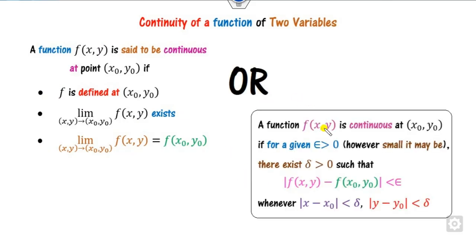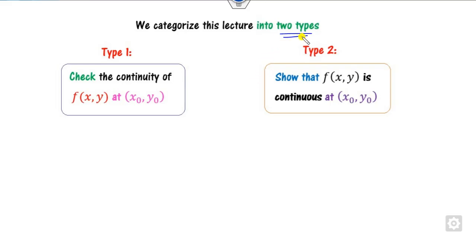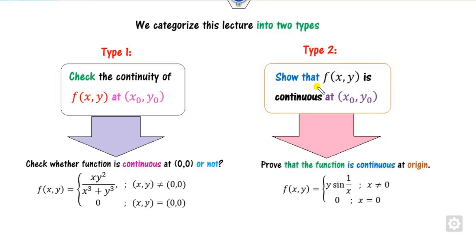Another way to check continuity: whenever the distance between (x, y) and (x₀, y₀) — that is, |x−x₀| and |y−y₀| — is less than epsilon, then you can say f(x, y) is continuous. So there are two different definitions, and we can categorize our lecture into two types. Type 1 is when the question asks you to check whether the function is continuous or not. Type 2 is when the question asks you to prove that the function is continuous.